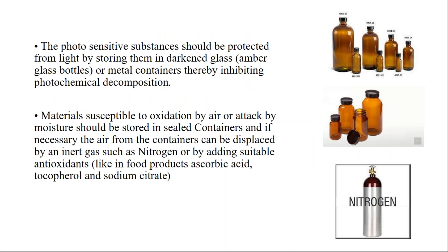Any substances or medicines which are photosensitive in nature can be protected from light by storing them in amber glass bottles or in metal containers, thereby eliminating this source of impurity — that is, the decomposition of your chemicals. You must have observed that some syrup bottles are in plastic containers, some in normal glass containers, and some in amber glass containers. This is because each drug has its own stability issues.